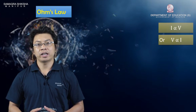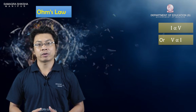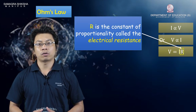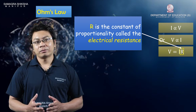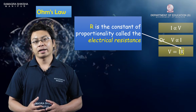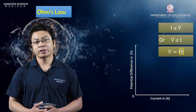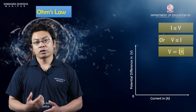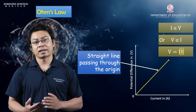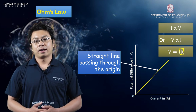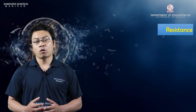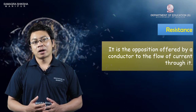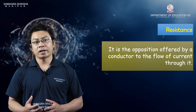If the proportionality constant is equal to R, then V is equal to R times I. So V = RI. The current is the flow of electric current through the conductor.